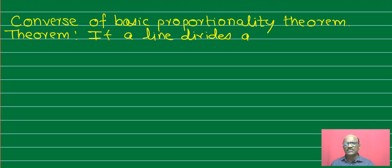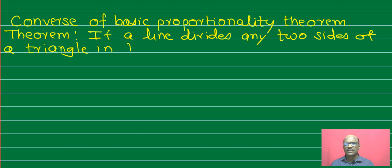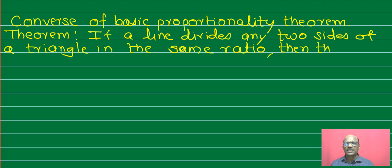Converse of Basic Proportionality Theorem: If a line divides any two sides of a triangle in the same ratio, then that line is parallel to the third side.